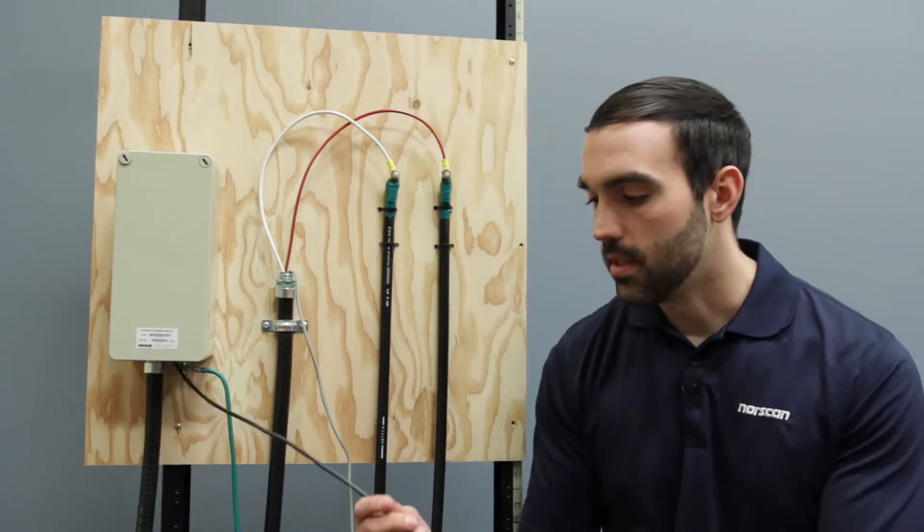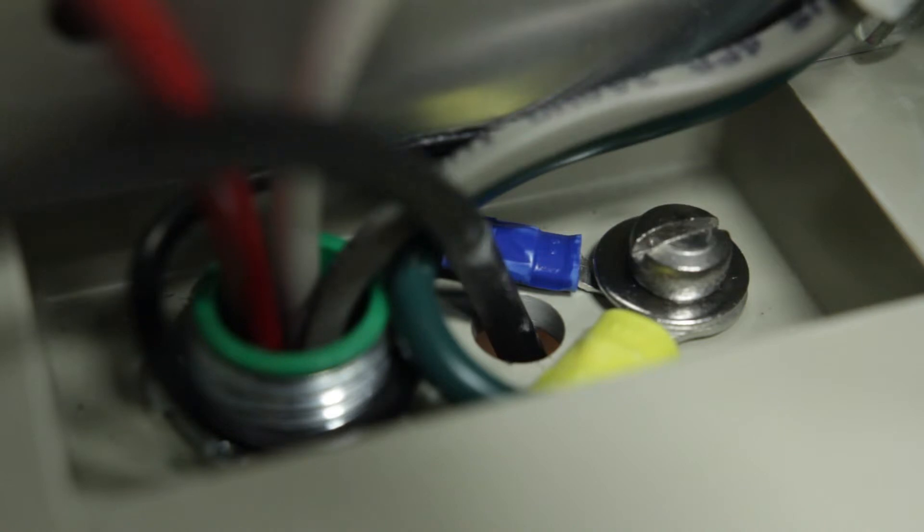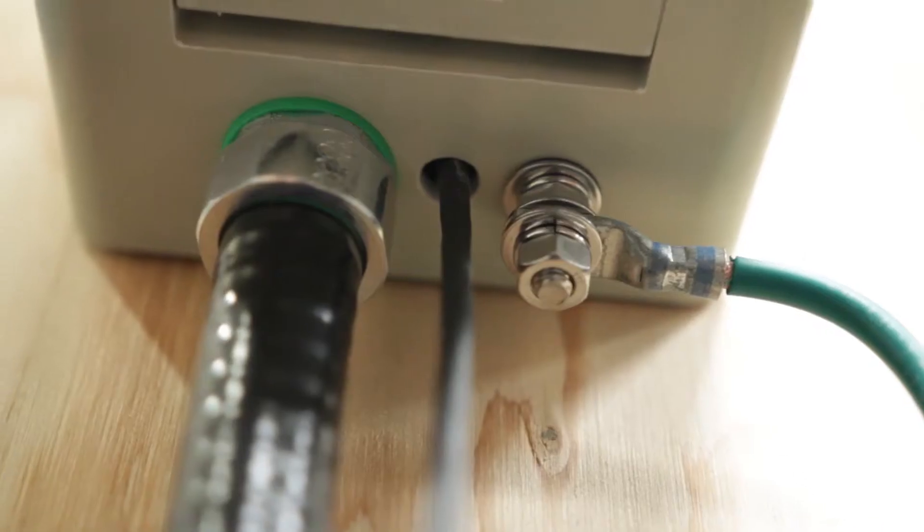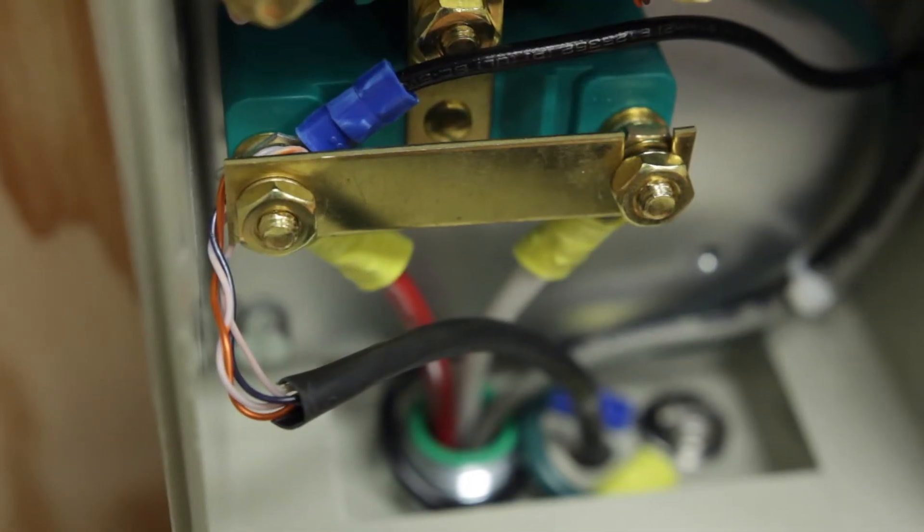The next step is to take this four pair NORSCAN communication cable and feed it through to the inside of the CoRAM. Then connect the four pair communication cable to the first brass shorting bar.